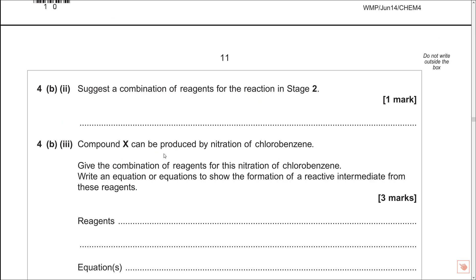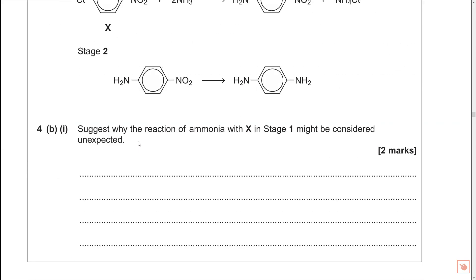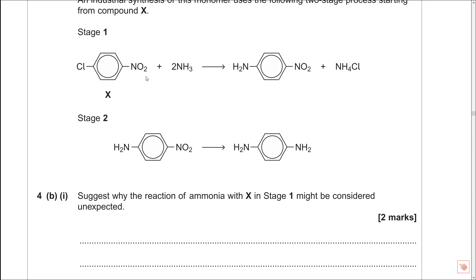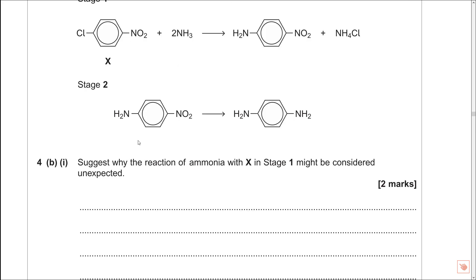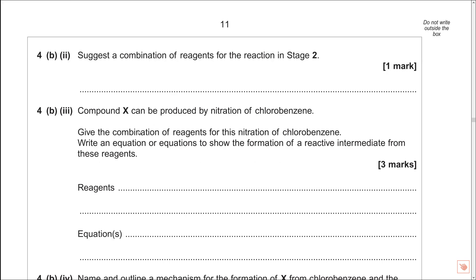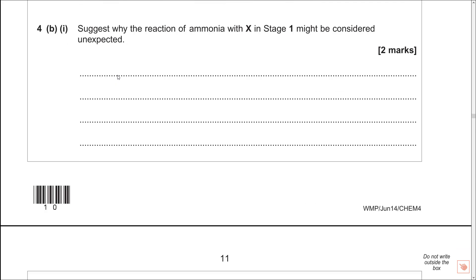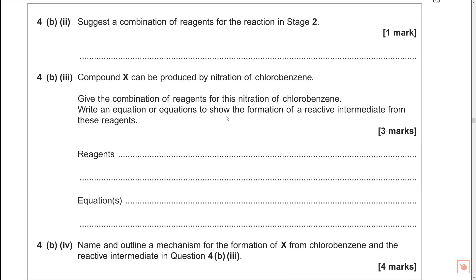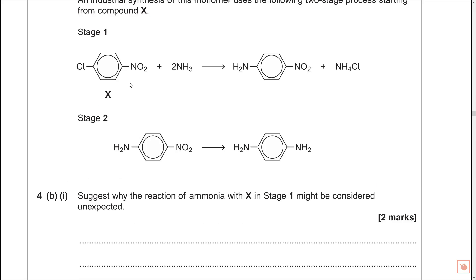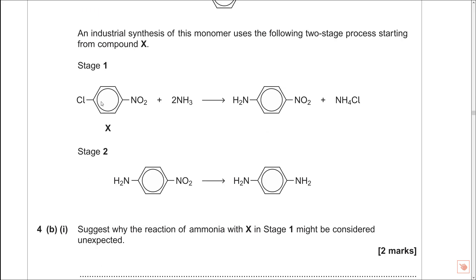Okay, first question is from June 2014. I couldn't find a lot of very recent stuff, so I have done the best I can. This doesn't seem to appear, this topic, as much as I thought it was going to. Now what we have got is we have got stage one. X is this guy here. It is a nitro-chlorobenzene. And what it is saying is, we are going to ignore stage two for now. Stage one is the one we are interested in. It is this bit here. So X, compound X can be produced by nitration of chlorobenzene. Give the combination of reagents to this nitration of chlorobenzene. Write an equation or equations to show the formation of a reactive intermediate from these reagents. So basically we can form this by nitrating chlorobenzene.